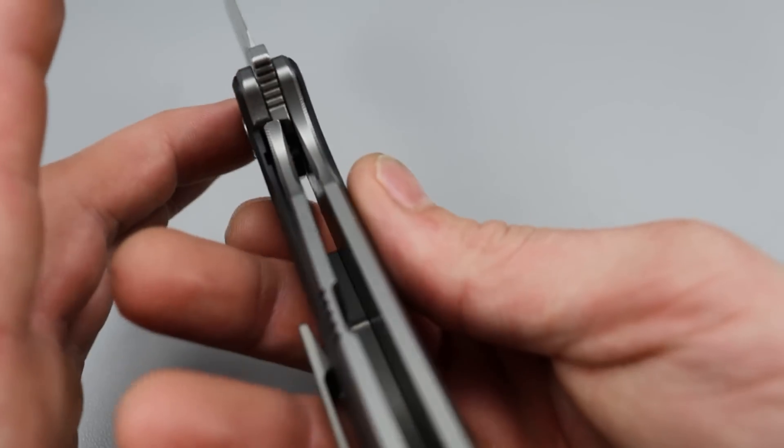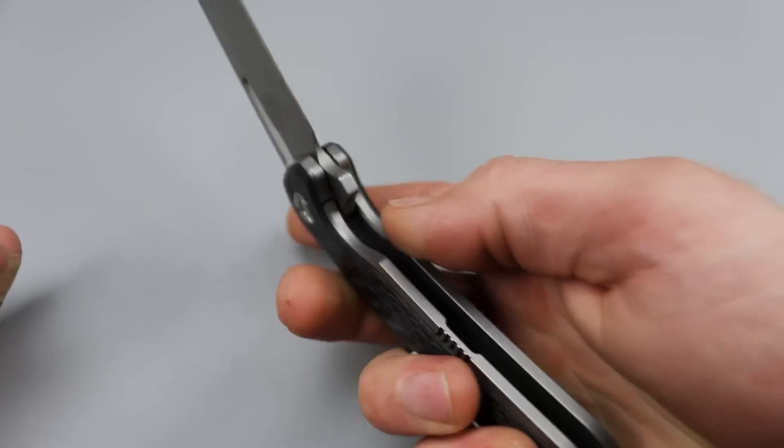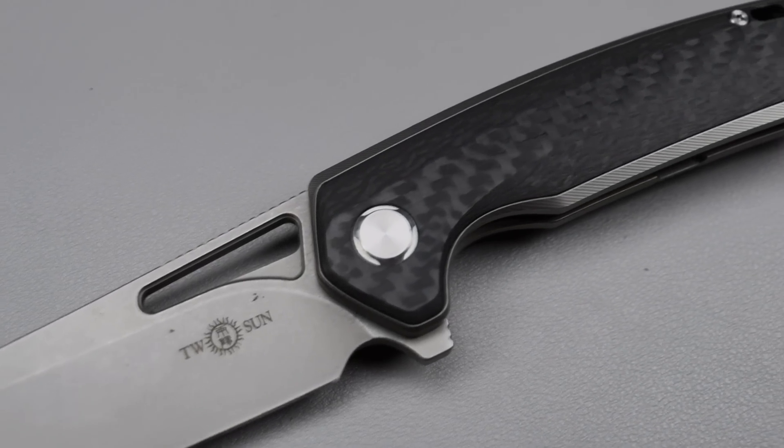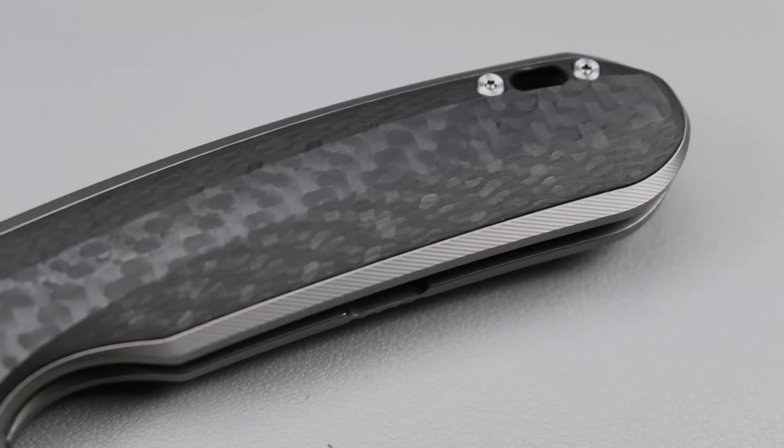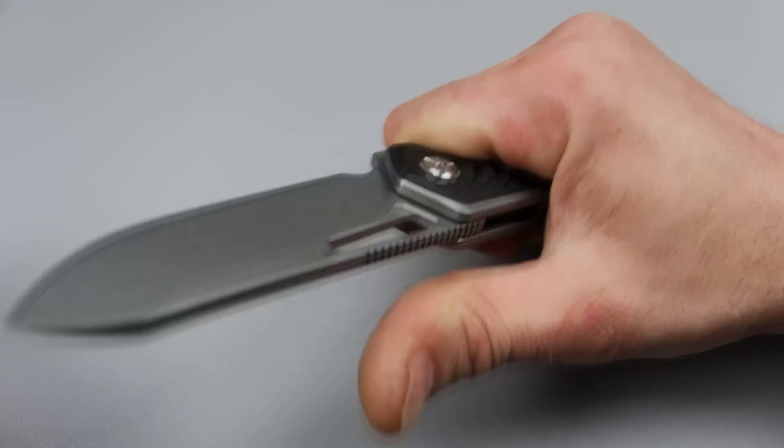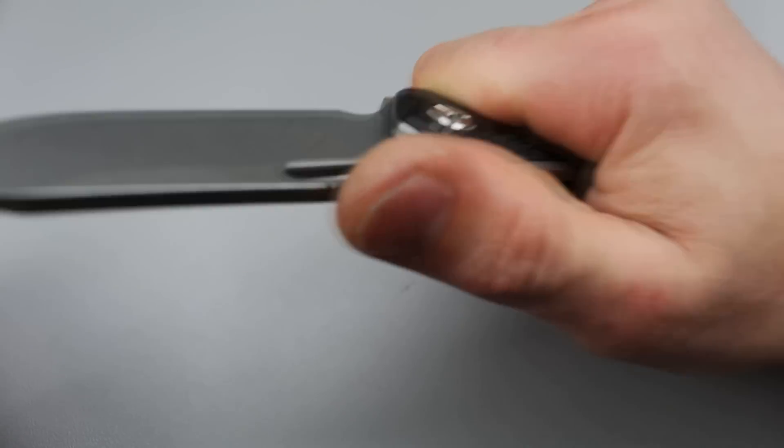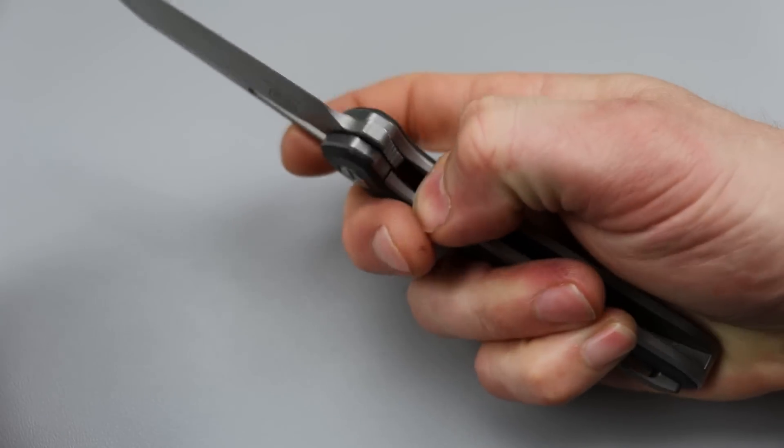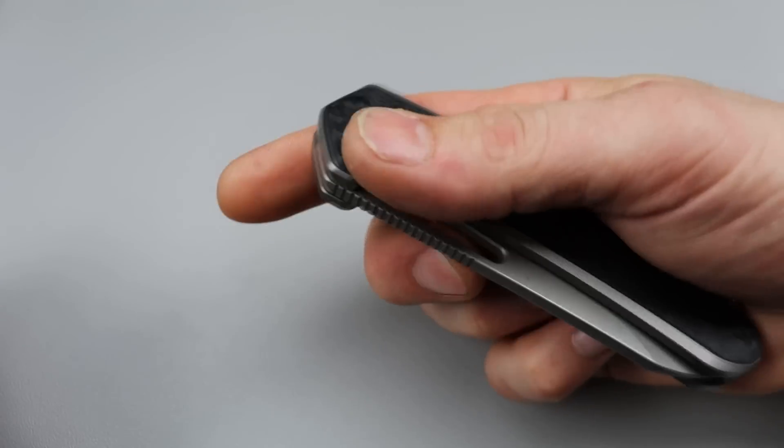You can see how thick the titanium scales are and how strong that lockup is. It's really good quality carbon fiber. The overlays on the carbon fiber are contoured, so it makes it mega comfortable. When you grip onto this, it does feel like you're holding onto a fixed blade. It's that comfortable. And then you have great access to the lock bar. It's very, very smooth.